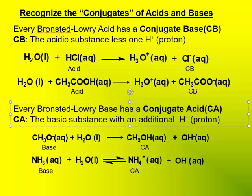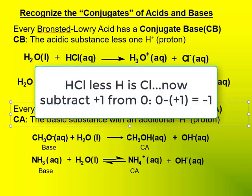I have two examples to show you. HCl is the acidic substance. Its conjugate base is the chloride ion. So look at the math. Subtract an H from HCl, of course you have Cl remaining.